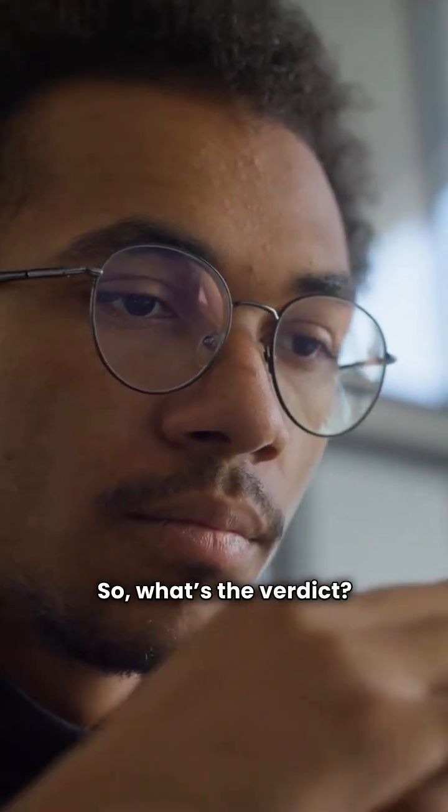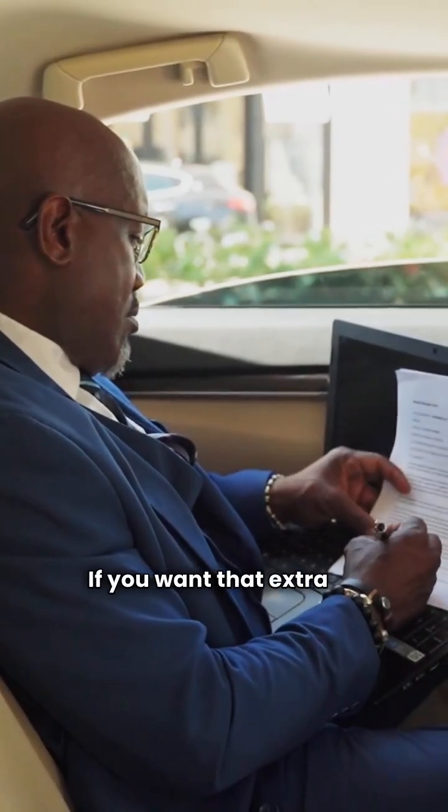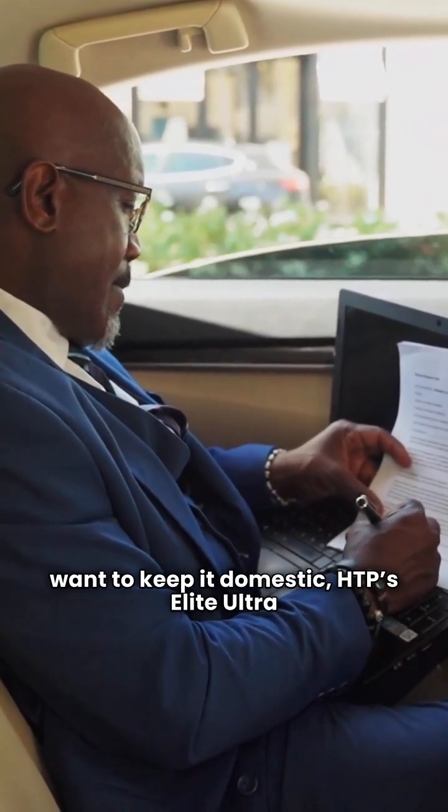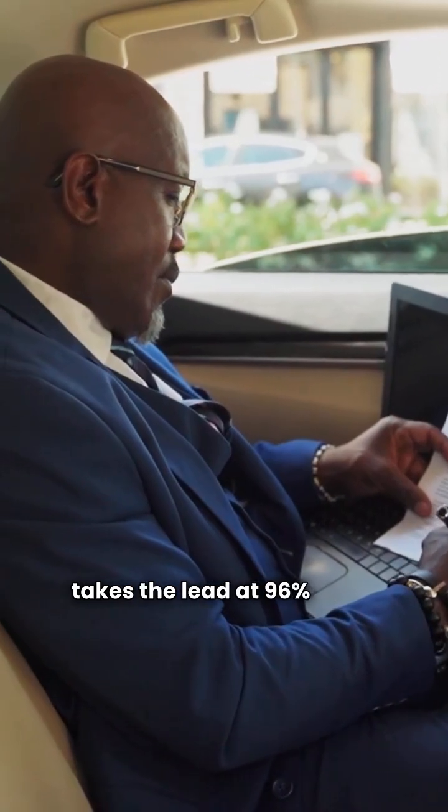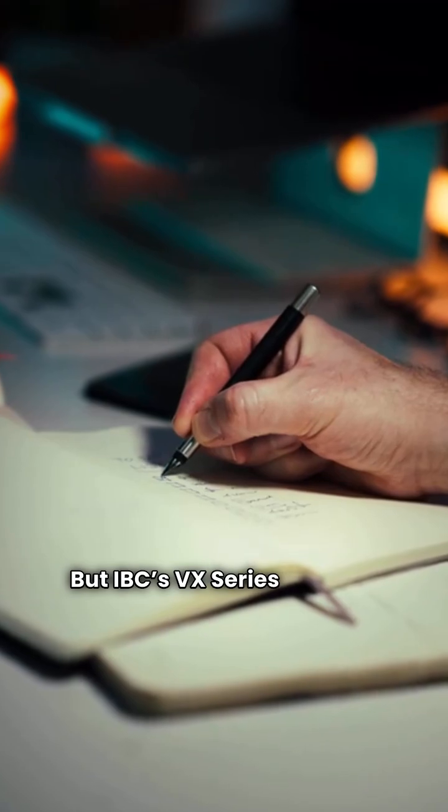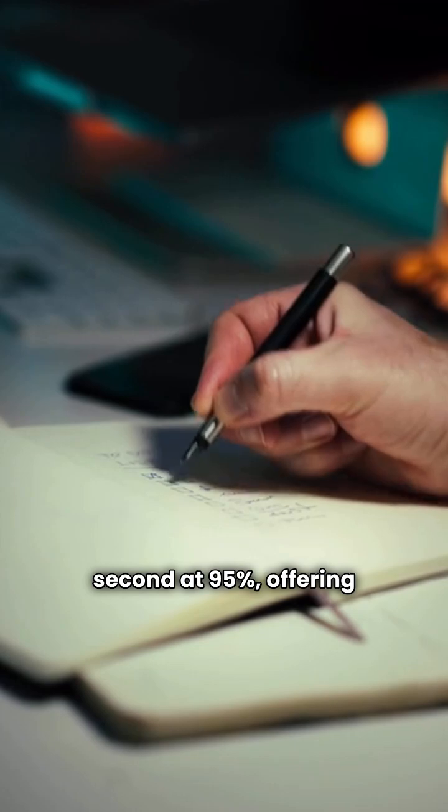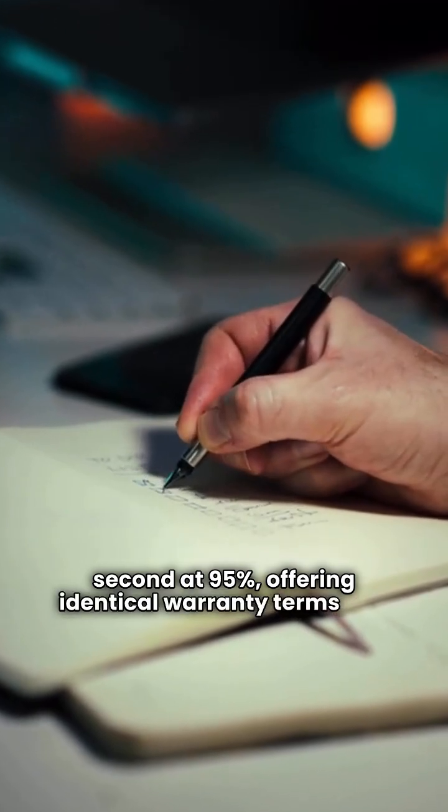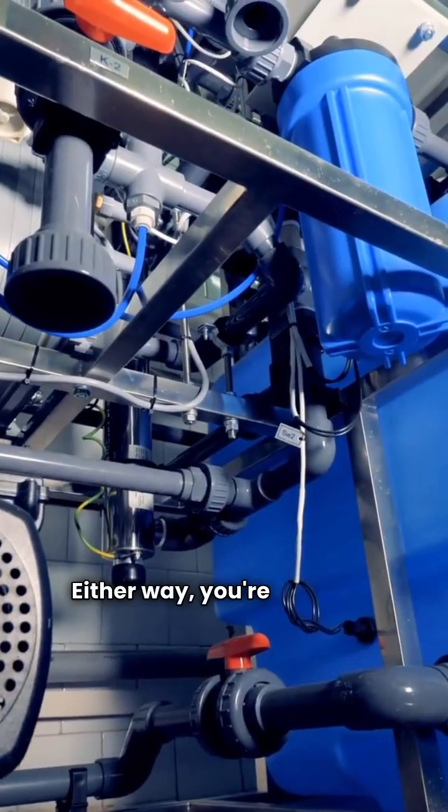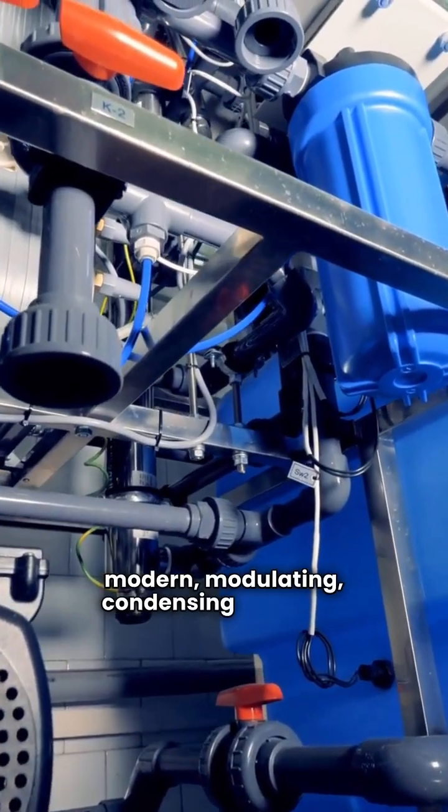So what's the verdict? If you want that extra 1% efficiency and want to keep it domestic, HTP's Elite Ultra takes the lead at 96% AFUE. But IBC's VX Series is a very close second at 95%, offering identical warranty terms and the same space saving wall hung design. Either way, you're getting a modern modulating condensing machine.